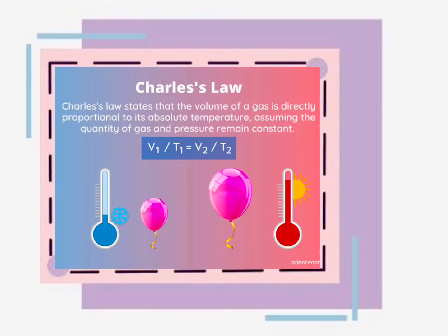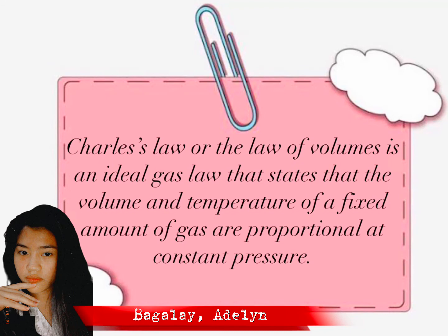Definition. Charles Law, or the law of volume, is an ideal gas law that states that the volume and temperature of a fixed amount of gas are proportional.